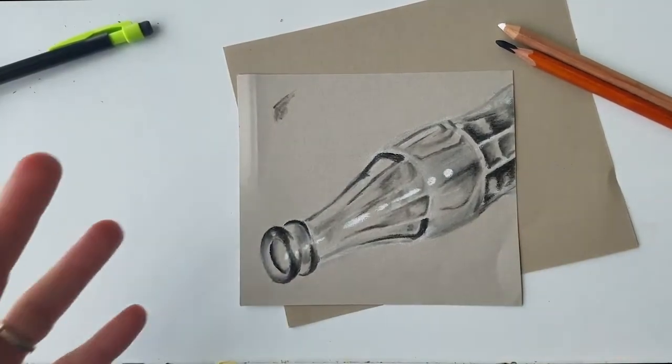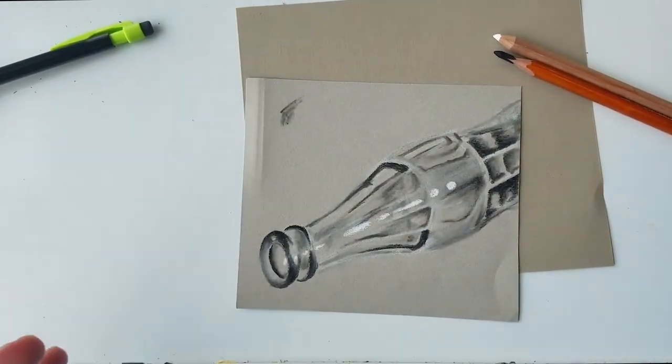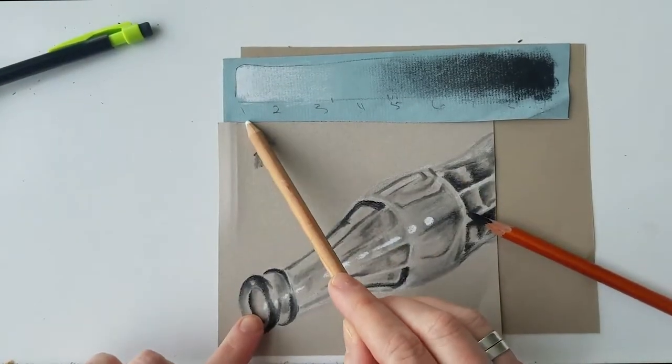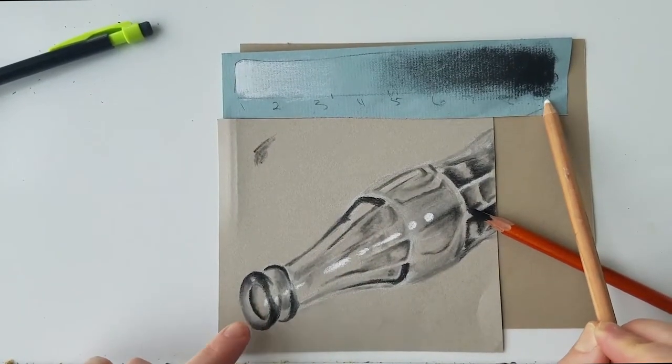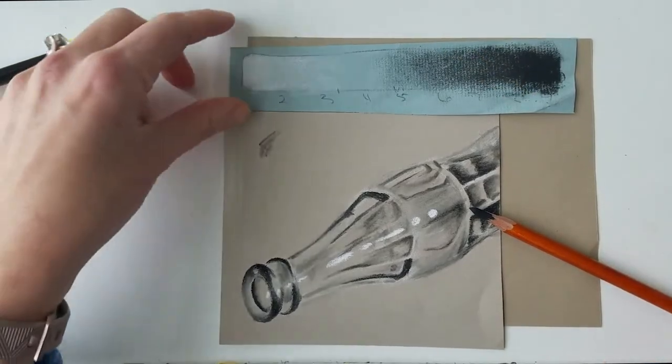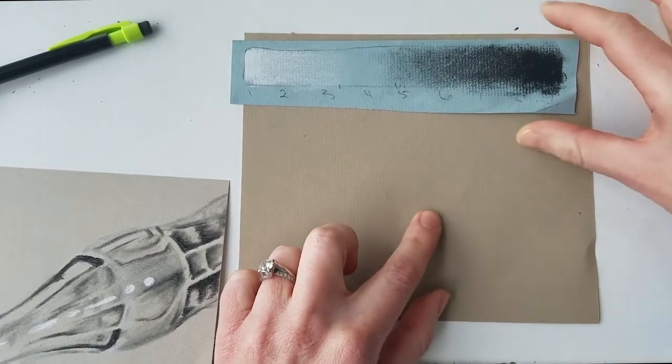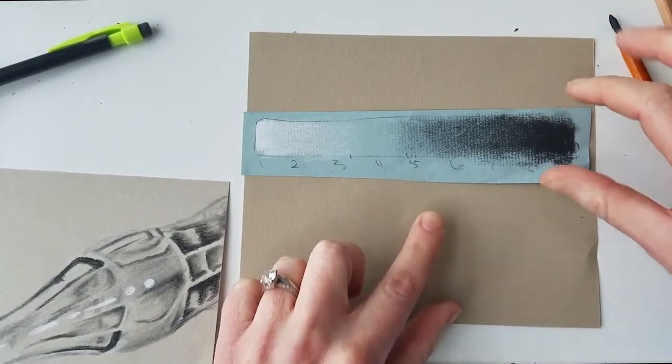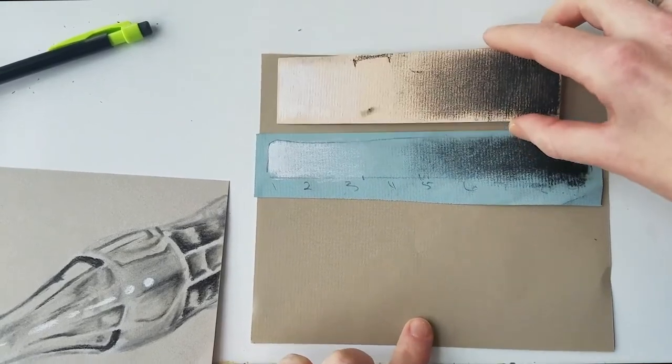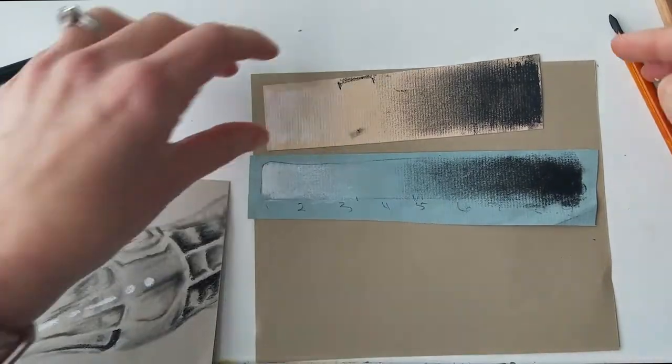So the first thing that we need to do before we get started is find out what value our paper is. Because as always, we're working on that nine-step value scale where we're thinking about, okay, one is pure white, nine is pure black, and now we've got our mid-tones. But this is so different because our paper is a mid-tone. So if I was to think about our paper on a nine-step value scale, this specific sheet of paper, I would say it's about a level four or five. If I had lighter paper, then maybe it would be like a level three. So we have to figure out the value of the paper before we get started.